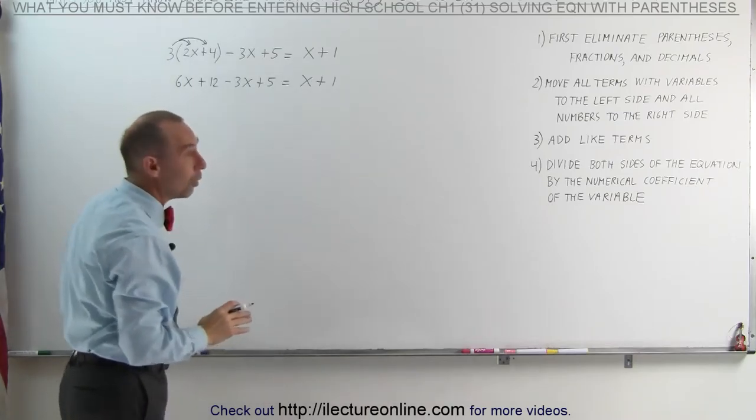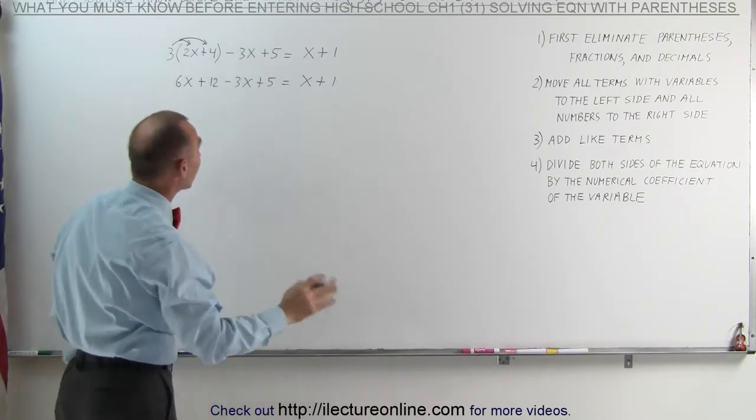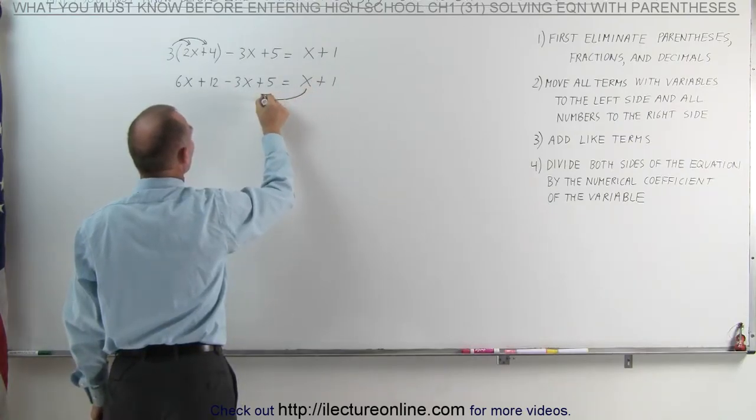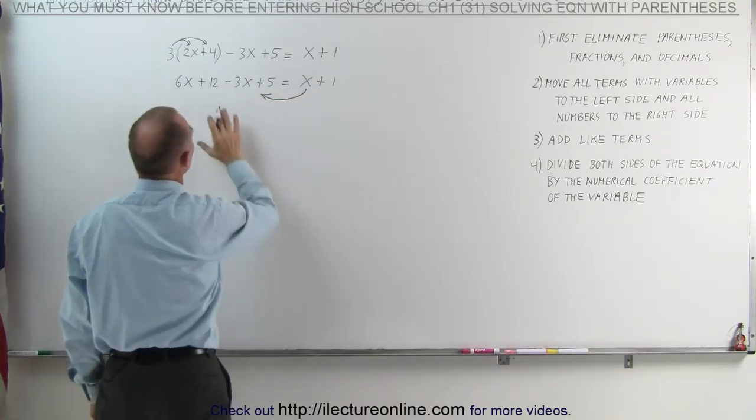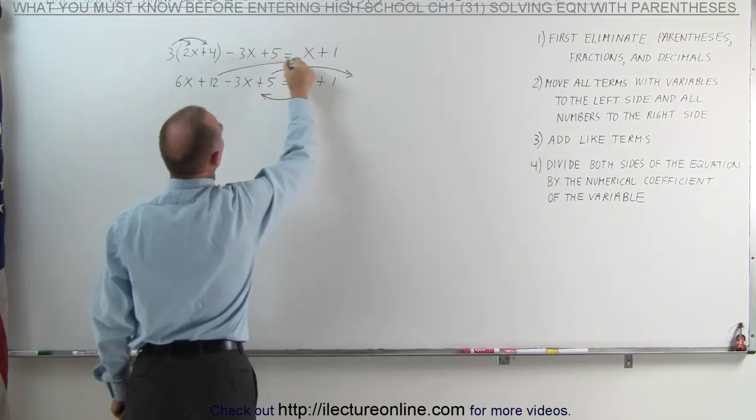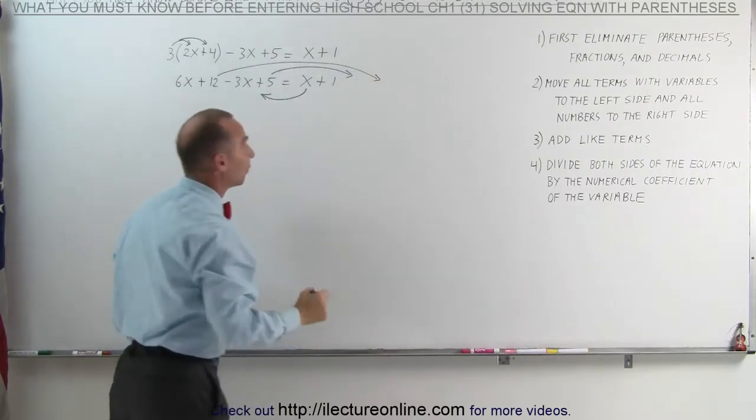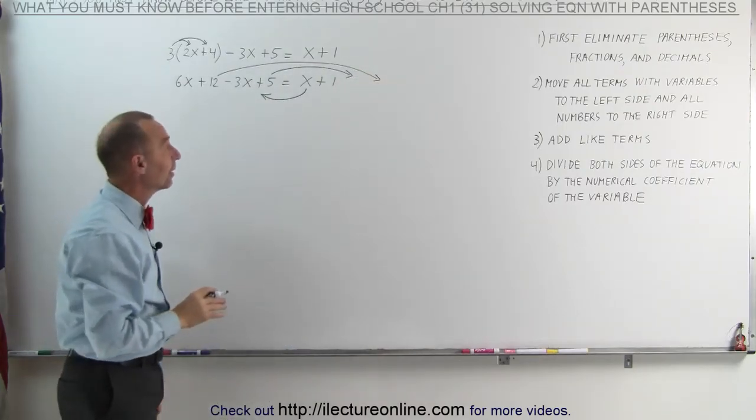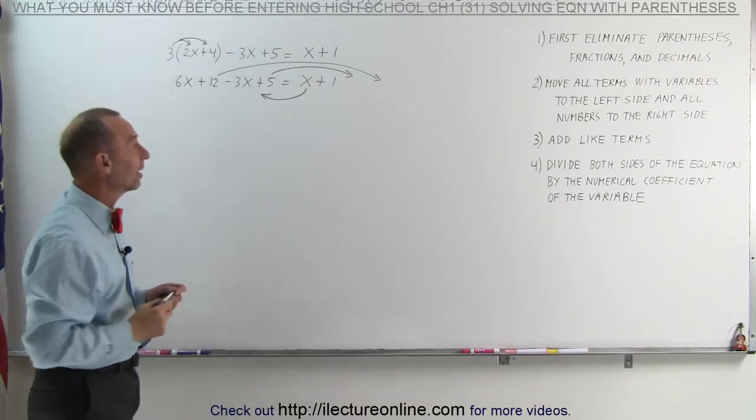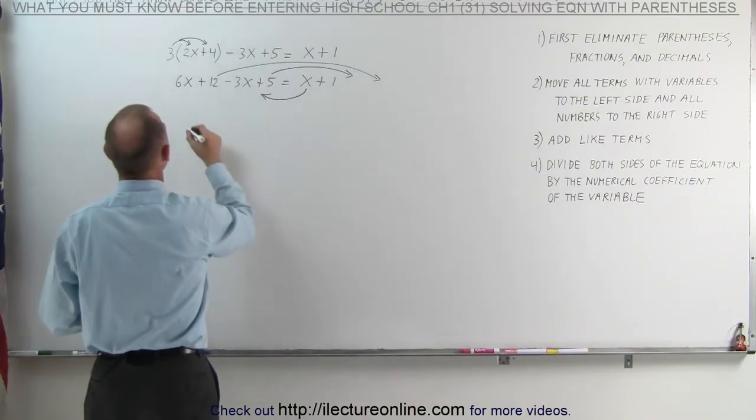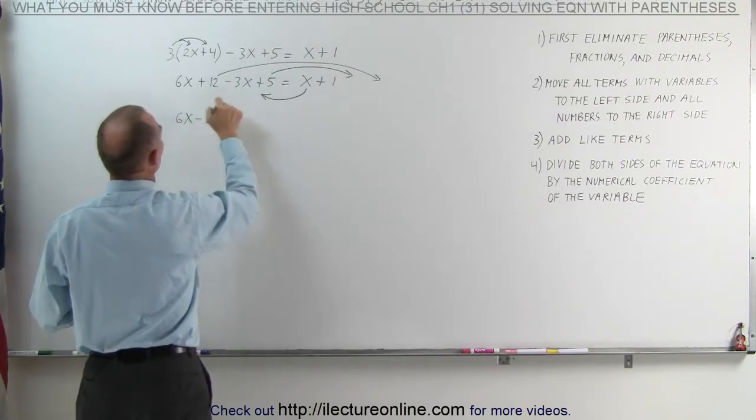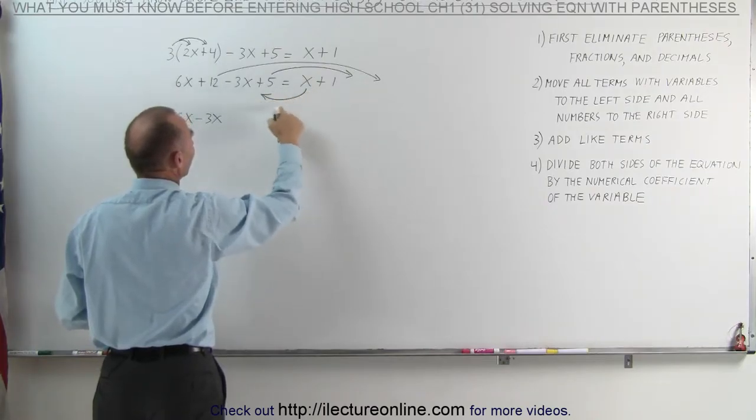The next step, we want to move all the terms that have variables in them to the left side of the equation. We have one of those on the right side, so we want to move the x to the left side of the equation. And we want to move all the numbers from the left side to the right side, which means we want to move the 5 over here and we want to move the 12 over here. Remember from the previous video that whenever we move anything across the equal sign, we have to change the sign.